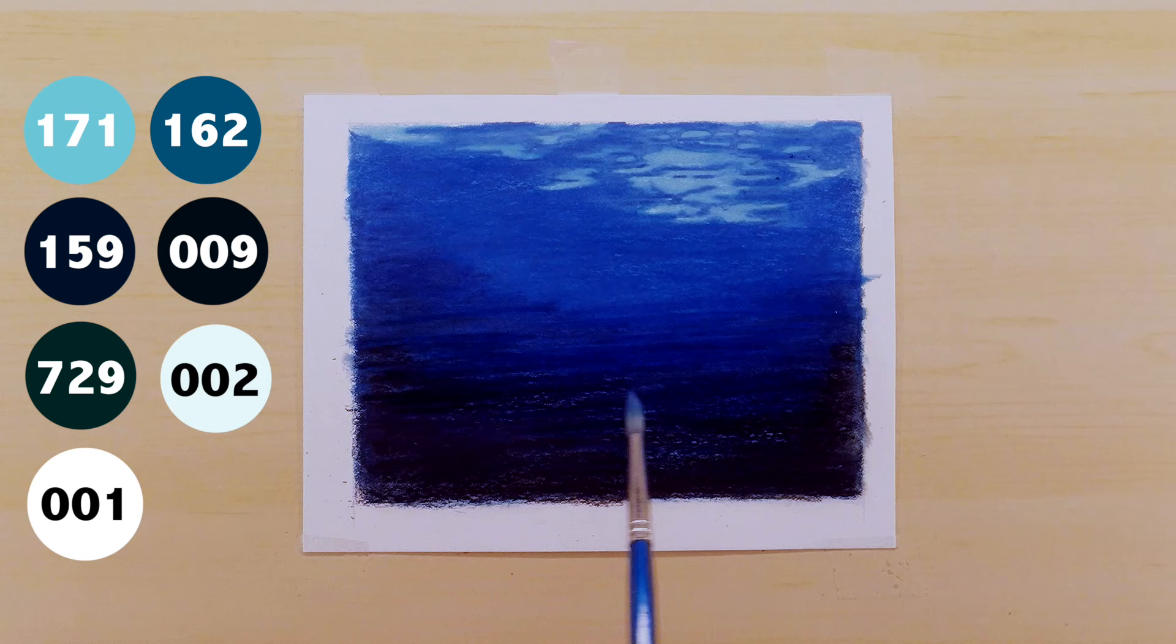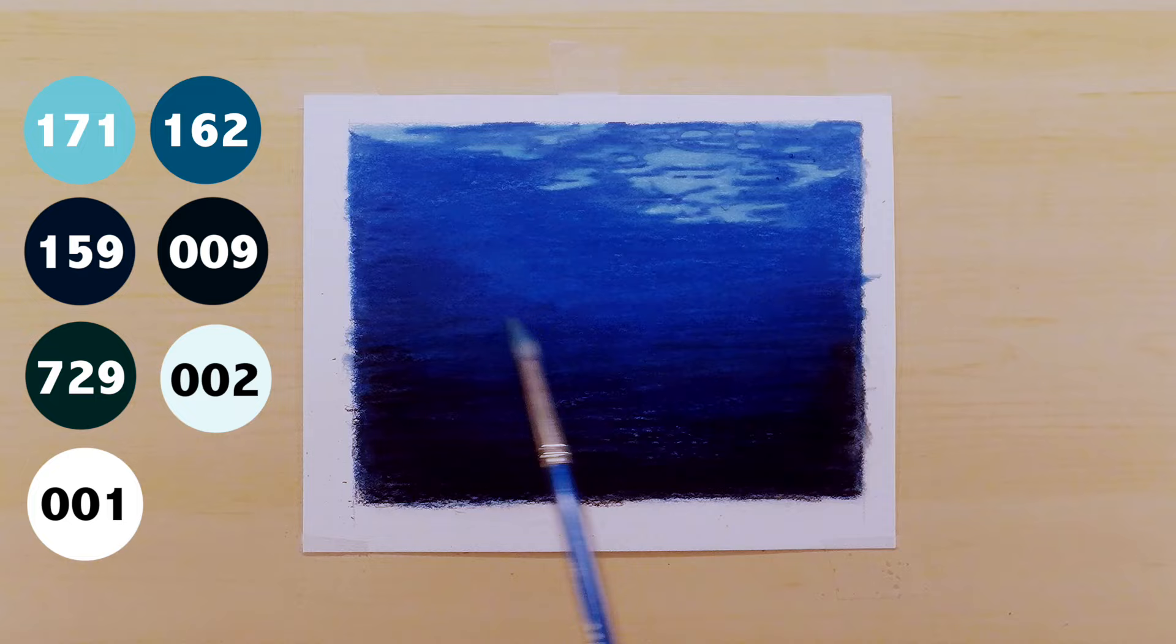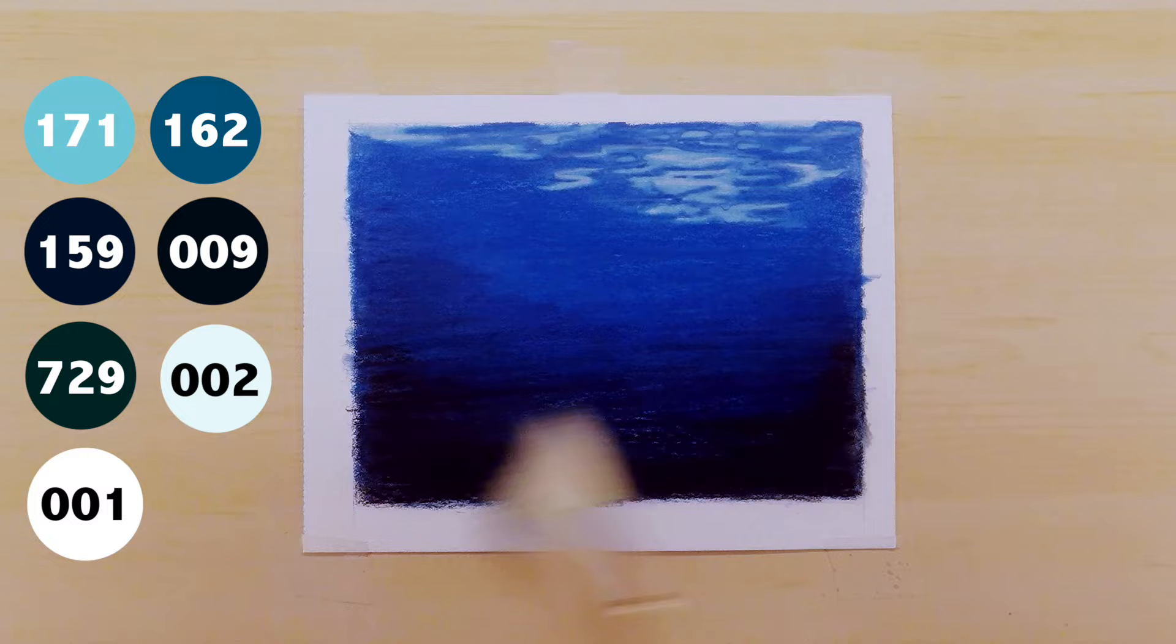I want those colors to be really smooth and gradiate really cleanly. The next thing I do is I use my 002 pencil, which is a really light blue, and I just kind of hit up the highlights a little bit.